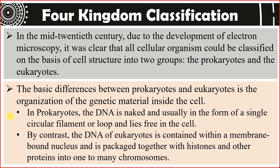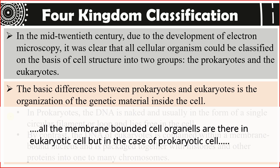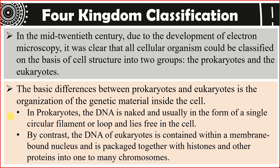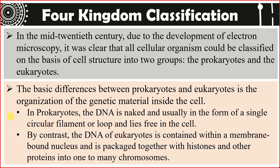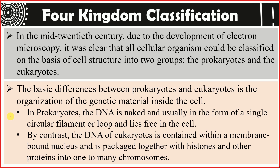In prokaryotic cells, there is no true nucleus. The DNA simply lies in the center of the cell in a circular form with no nuclear membrane, nucleoplasm, or nucleolus. This primitive nuclear region is known as the nucleoid or genophore. The DNA of prokaryotes also lacks association with histone proteins — it is naked DNA — unlike in eukaryotic cells where DNA coils around histone proteins to form chromosomes.